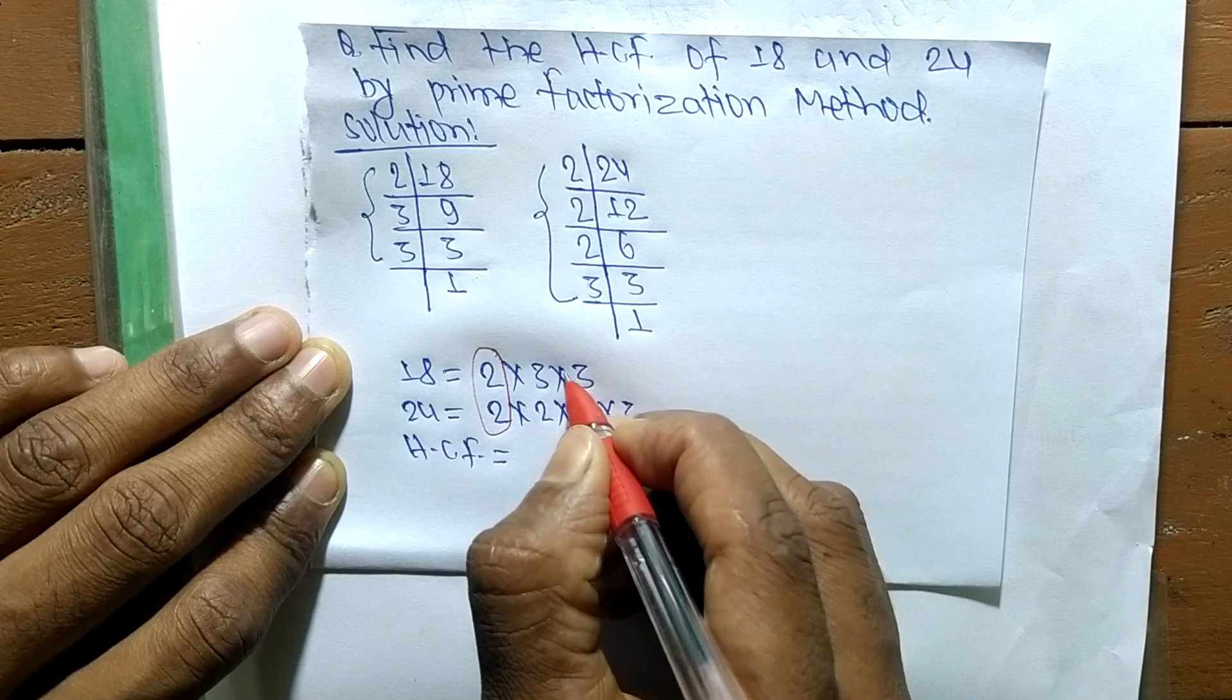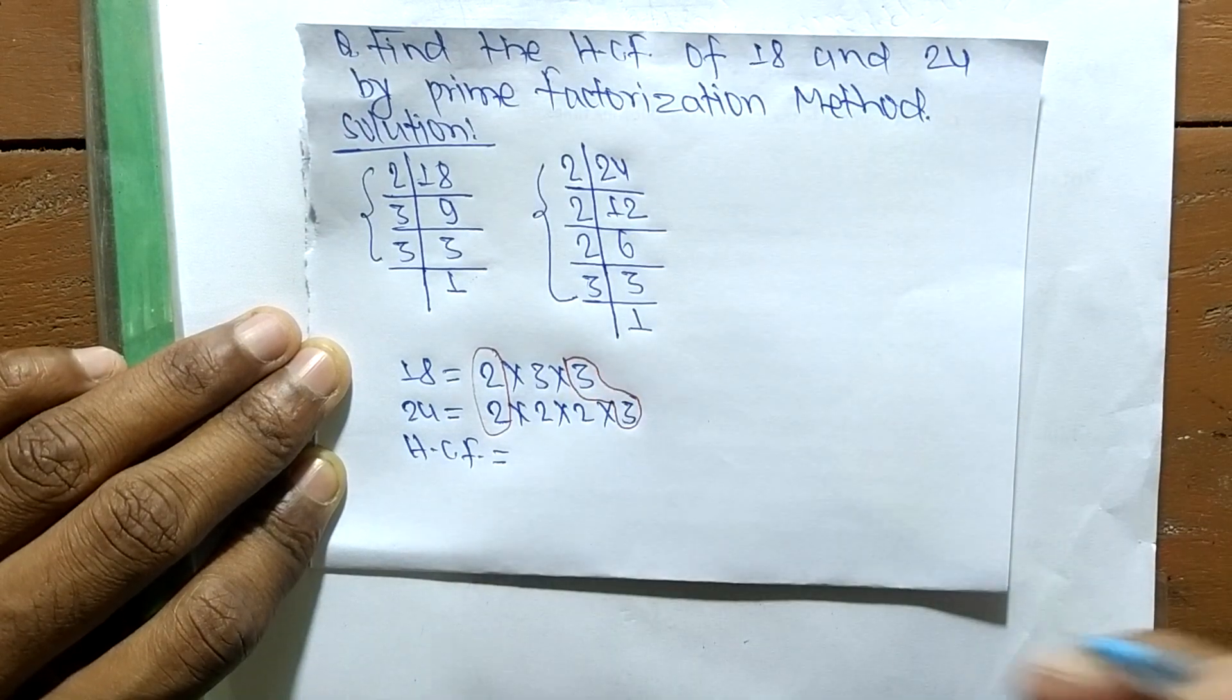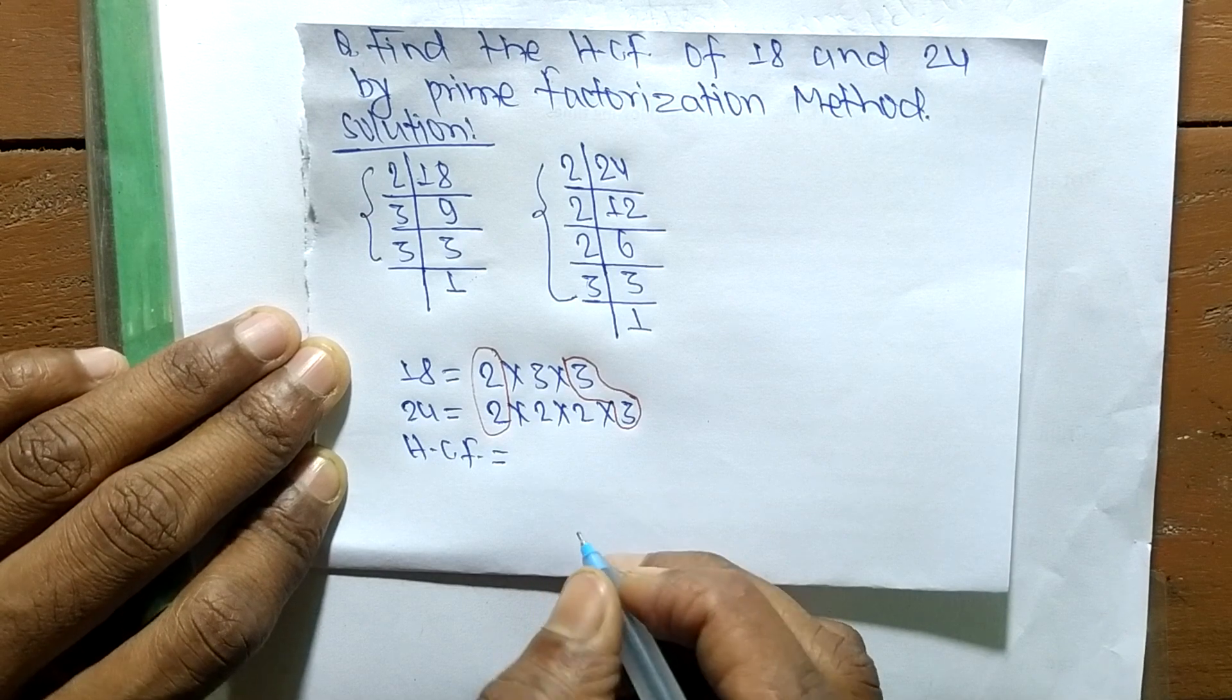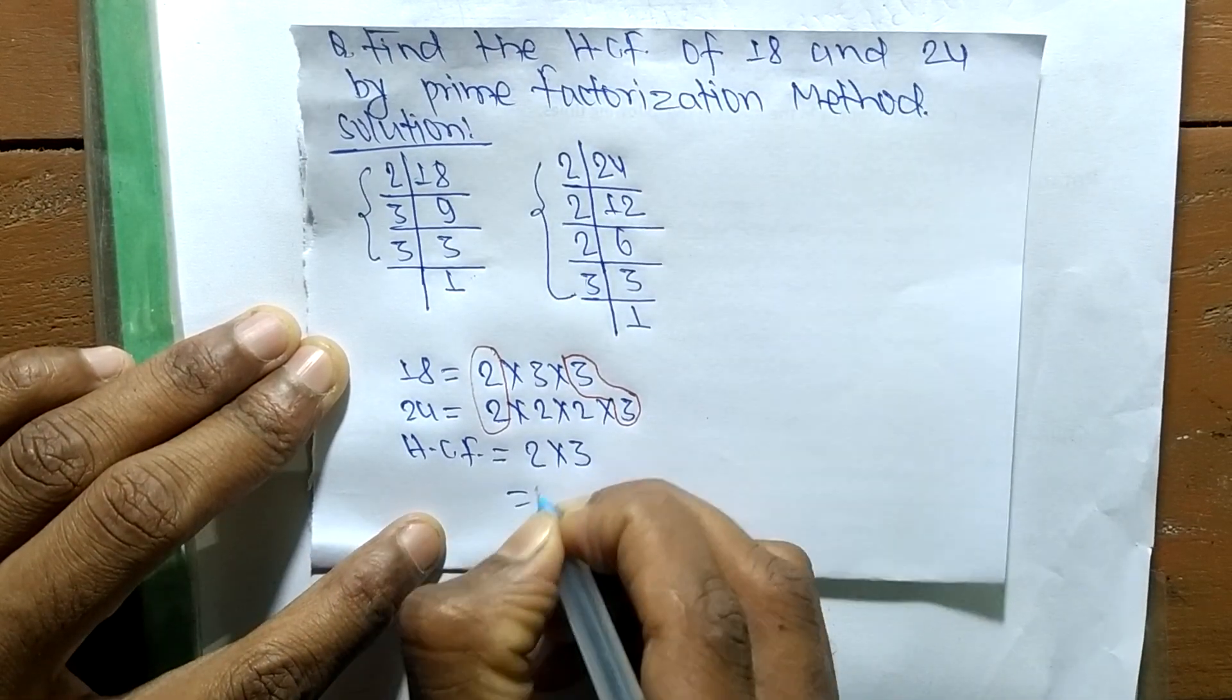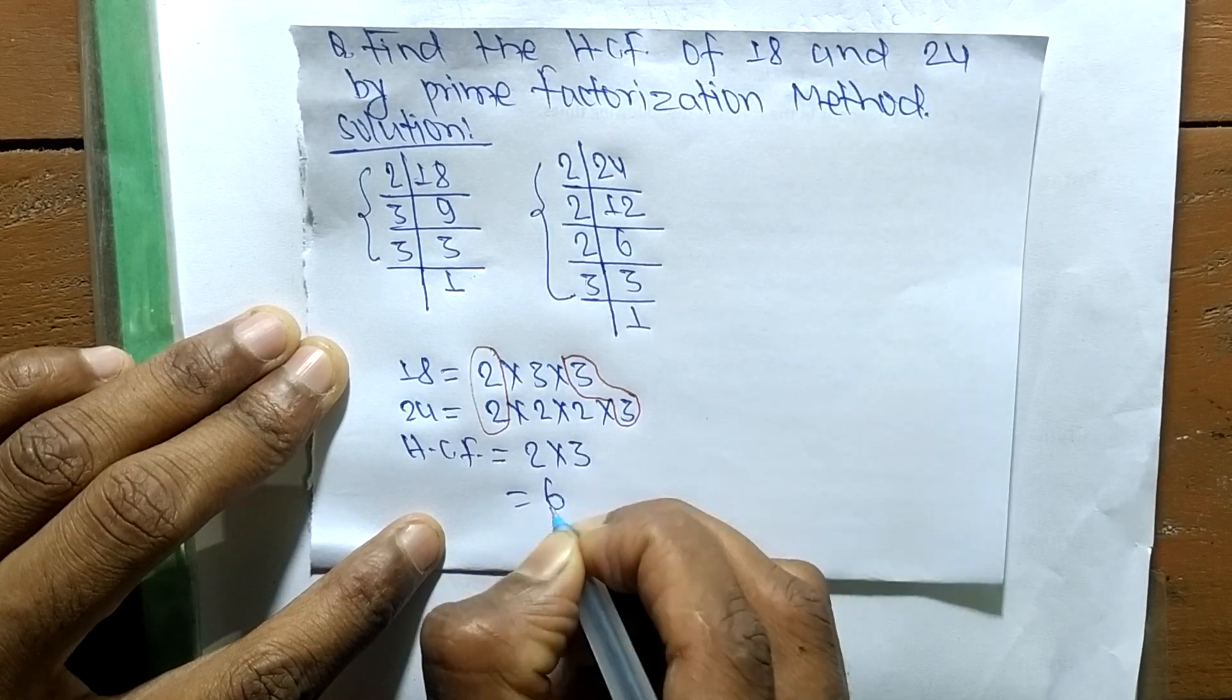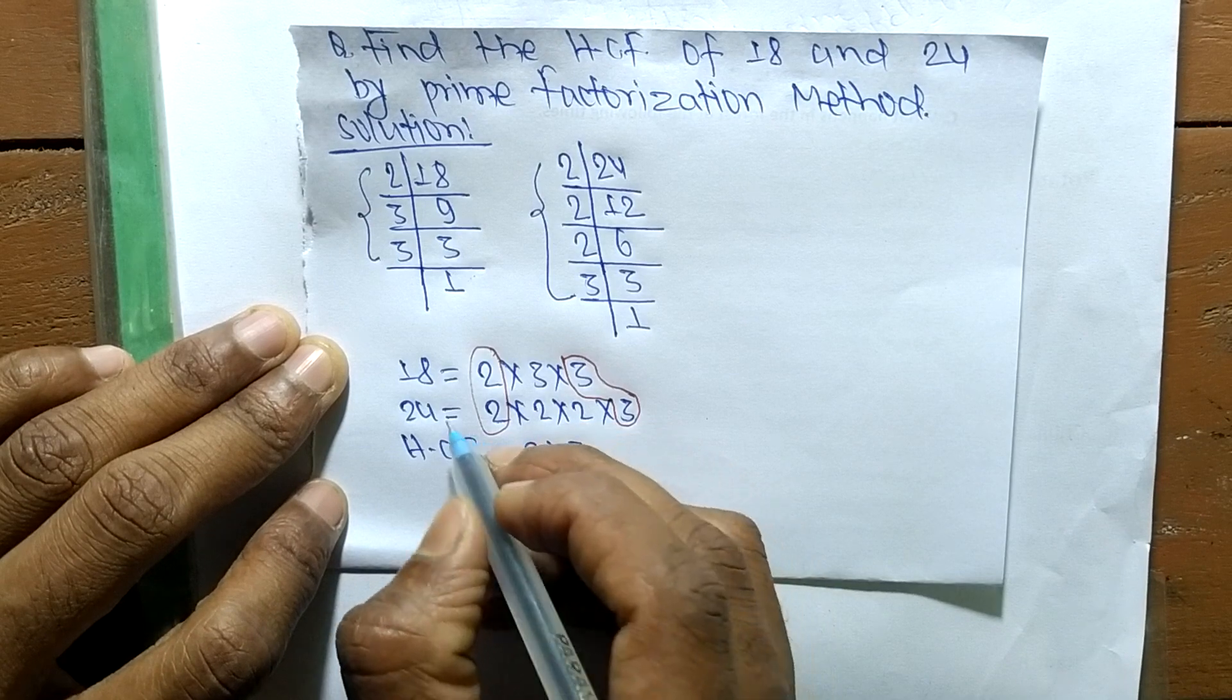And the second one is 3. So the HCF is the product of all the common factors, which are 2 and 3. So 2 times 3 means 6. Therefore, 6 is the highest common factor of 18 and 24.